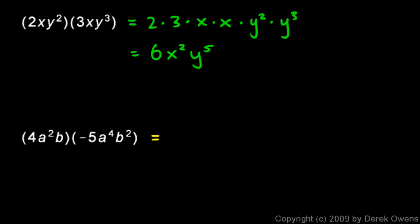4 and negative 5. And I put the parentheses there to indicate multiplication so it doesn't end up looking like 4 minus 5. That times a squared times a to the fourth and times b and a b squared.